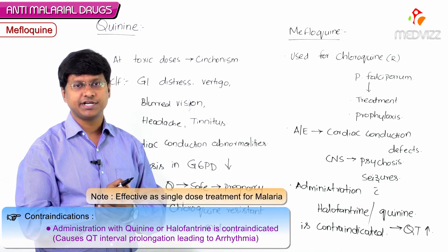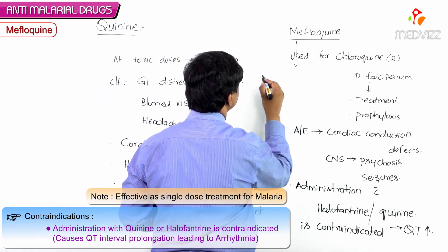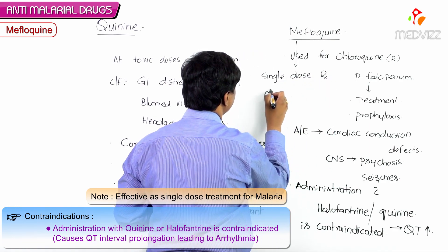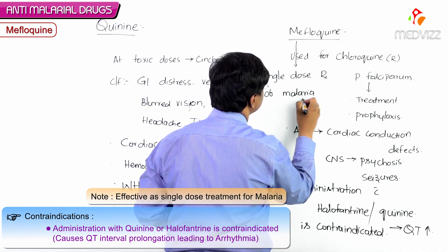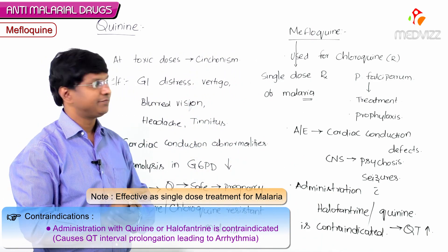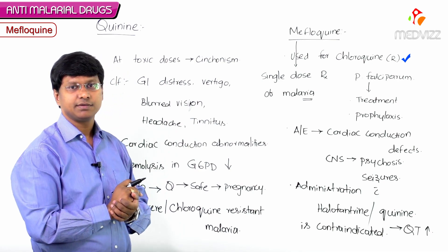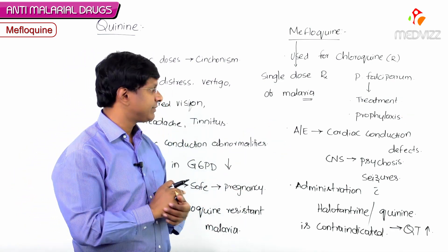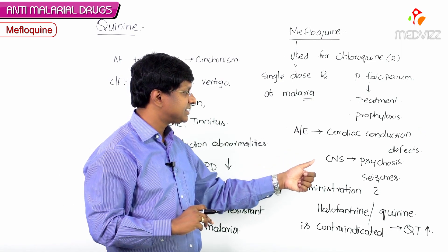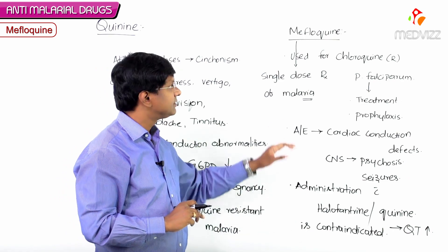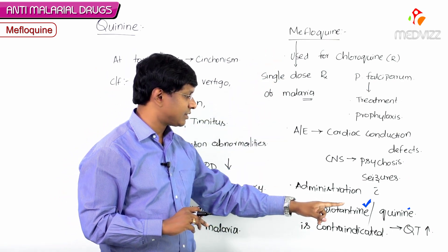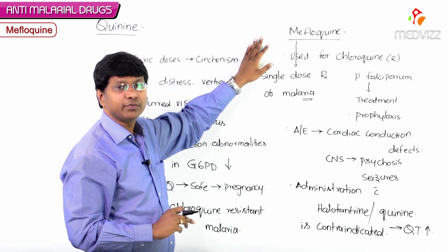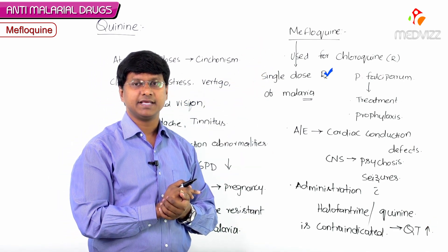Because of QT prolongation there can be precipitation of arrhythmias. Mefloquine is effective as a single dose treatment of malaria. To summarize: mefloquine is used for chloroquine resistant plasmodium falciparum infections both for treatment and prophylaxis; adverse effects include cardiac conduction defects, psychosis, and seizures; and it should not be combined with halofantrine or quinine.